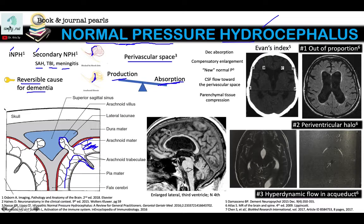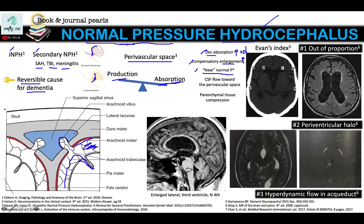The inciting factor for developing normal pressure hydrocephalus is an initial decrease in absorption of the CSF for some reason. With decreased absorption, you get increased volume of fluid. The body compensates by enlarging the ventricles, increasing the overall volume, so that the increase in volume does not raise the pressure — hence you have a normal pressure, a new normal steady state.